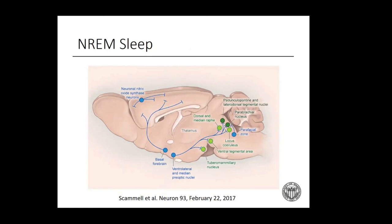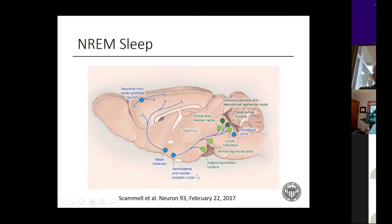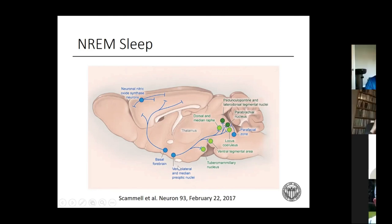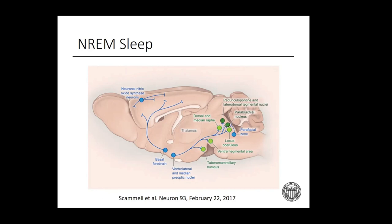When we enter non-REM sleep, the ventrolateral and median preoptic nuclei in the anterior hypothalamus come online and block all those monoaminergic and cholinergic wake-promoting areas. Basal forebrain projections to the cortex are also involved. What's thought to occur: adenosine builds up around the median preoptic nucleus, this turns on the VLPO, which starts to block those wakeful areas, allowing us to fall asleep. Studies in animal models injecting adenosine near this region have precipitated sleep in those animals.